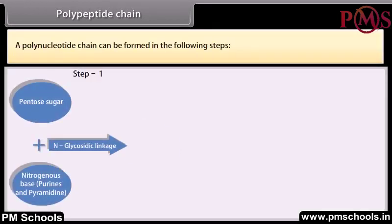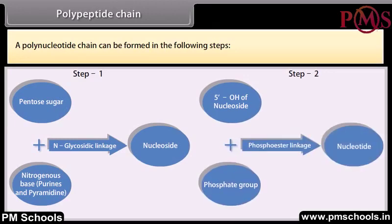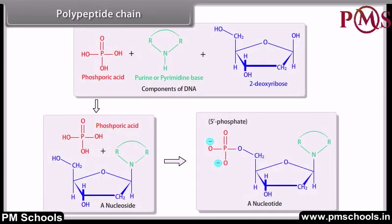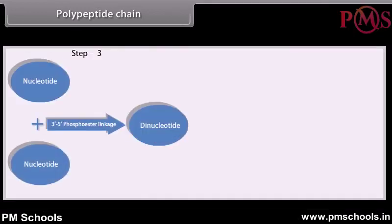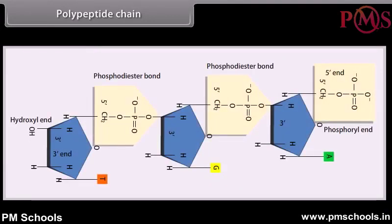A polynucleotide chain can be formed in the following steps. A polynucleotide chain has a phosphate moiety at one free end of ribose sugar. This is known as the 5' end of the polynucleotide chain. The other free end of ribose sugar has an attached OH group. This is called the 3' end of the polynucleotide chain.